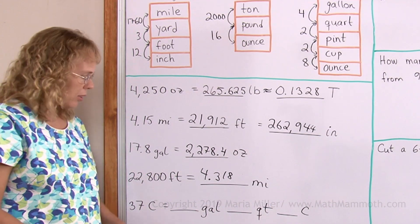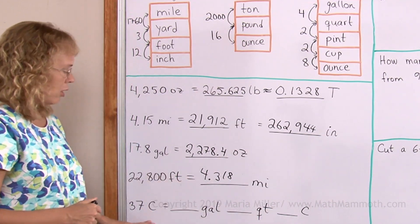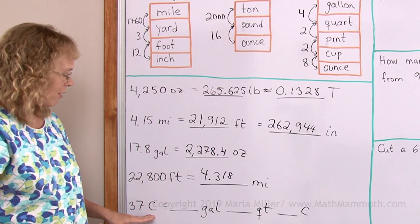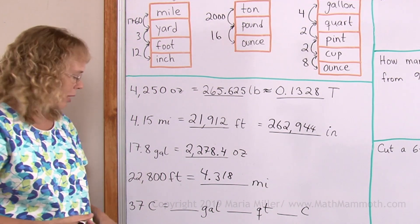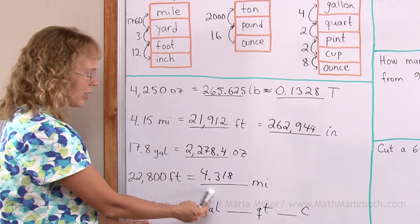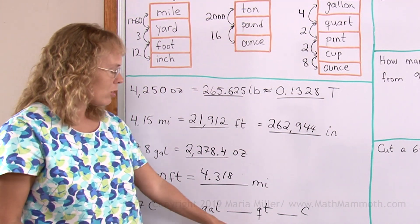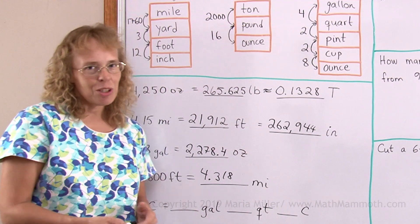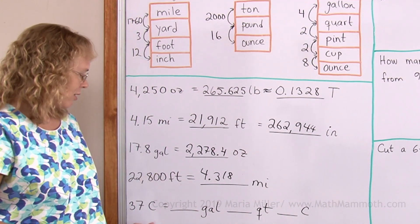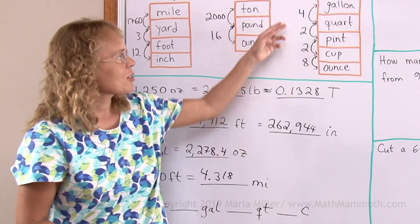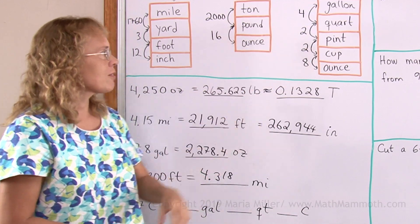Here we have 37 cups into gallons, quarts and cups. That's always a little tricky when you're not going to give these as whole gallons. It would be easy if we just went from cups to some decimal number of gallons. But instead we need to give it as whole gallons, whole quarts and whole cups. So let me go step by step instead of just rushing from cups to gallons. I'll just go from cups to pints first.